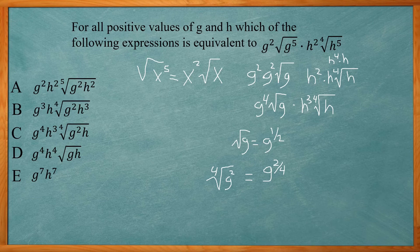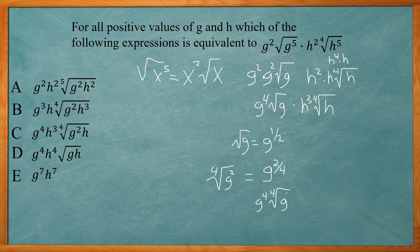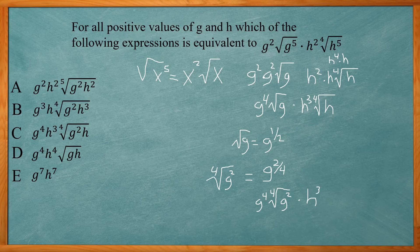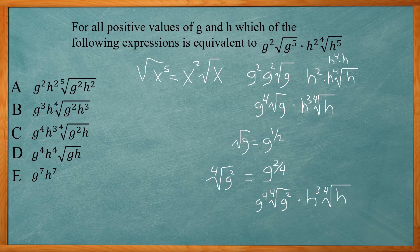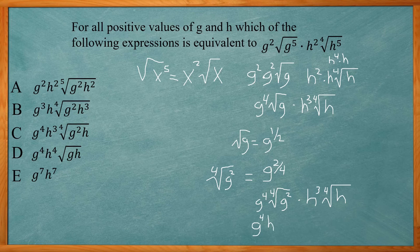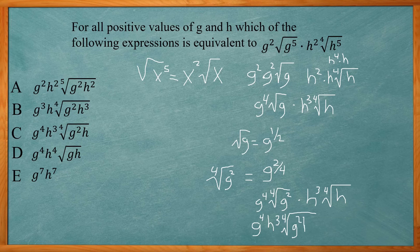So let's rewrite it using that. So g to the fourth power times the fourth root of g squared times h to the third power times the fourth root of h. If we have the same radical fourth root, we can combine those into one and multiply what's underneath the radicals together. So I'll bring down the g to the fourth, h to the third, and then the fourth root of g squared and h multiplied together.